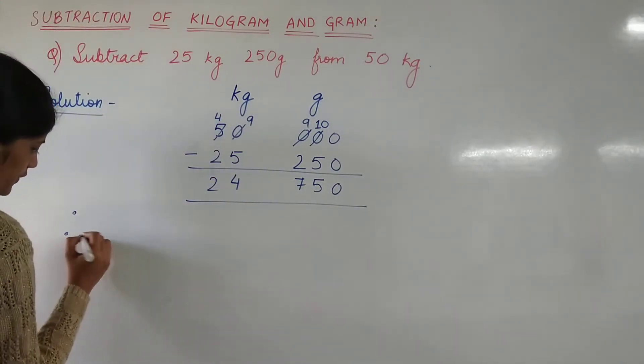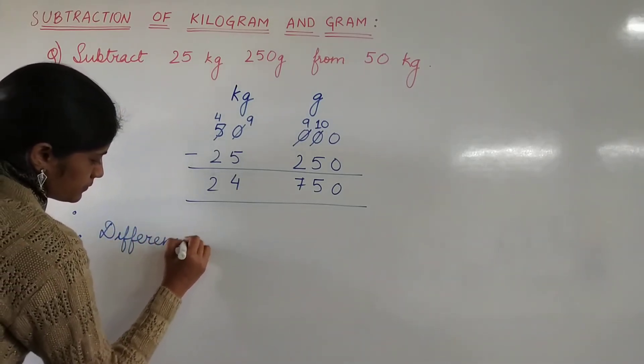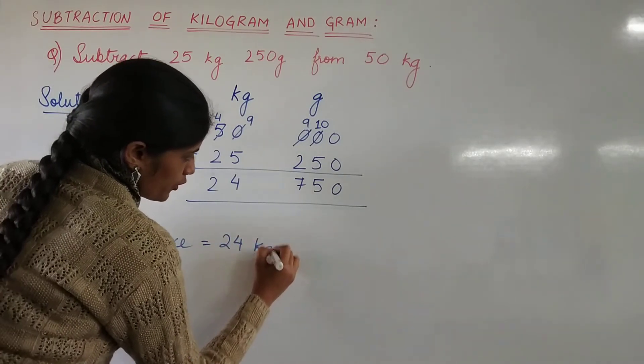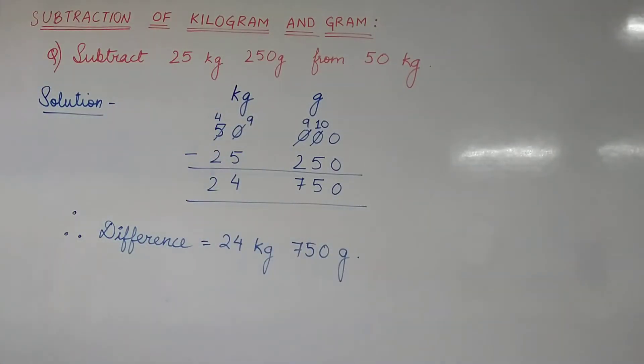Therefore, the difference is equal to 24 kilograms, 24 kg, 750 grams. So children, we have discussed addition and subtraction of kilogram and gram.